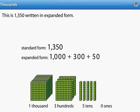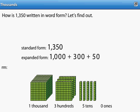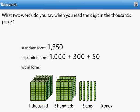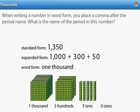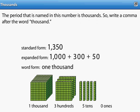How is 1,350 written in word form? Let's find out. When you read the digit in the thousands place, you say "one thousand," so that is what you write to show that digit in word form. When writing a number in word form, you place a comma after the period name. The period named in this number is thousands, so write a comma after the word thousand.